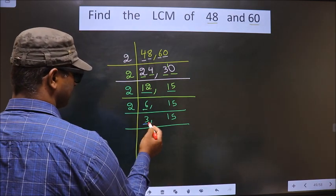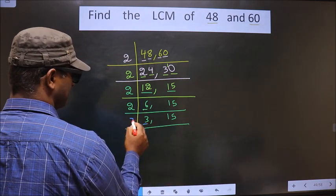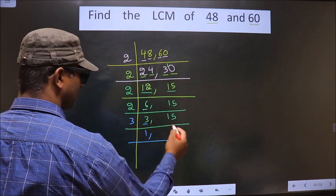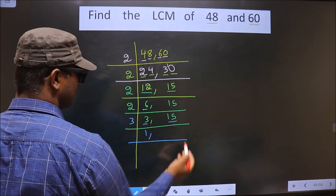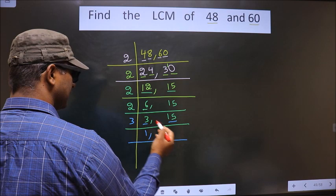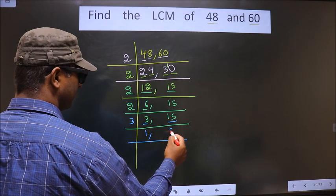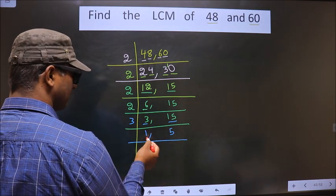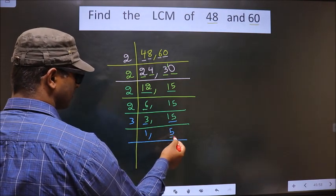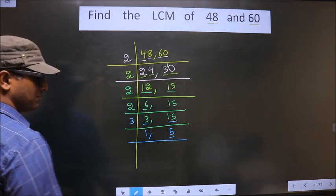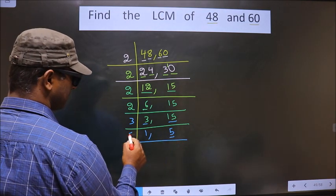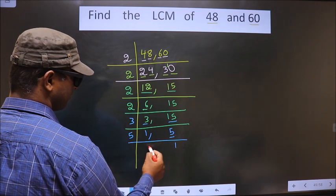Now here we have 3. 3 is a prime number, so I take 3 ones are 3. Here we have 15 — when do we get 15 in the 3 table? 3 fives are 15. Now here we got 1. So focus on the next number, which is 5. 5 is a prime number, so we take 5 ones are 5.